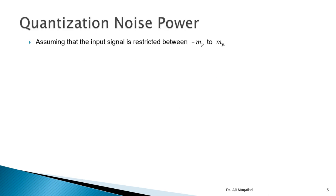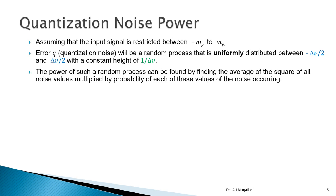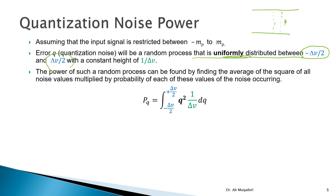Now let's study the quantization noise power. We assume the signal is restricted between minus NP and NP — it does not exceed the maximum. We define the quantization error q to be random and uniformly distributed between two adjacent quantization levels. Between any two levels, q can take any value in between in a uniform way — it is not concentrated in any particular region.